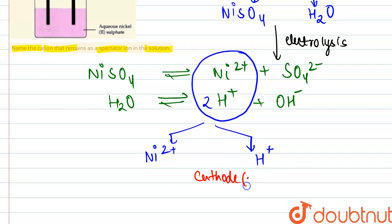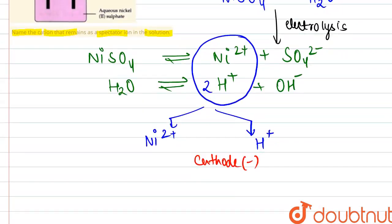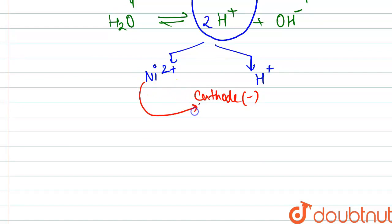The cathode is the negative terminal. The tendency of nickel ions to gain electrons and get reduced at the cathode is more for the nickel ions, so nickel ions will be discharged at the cathode.